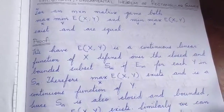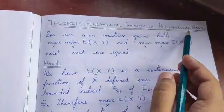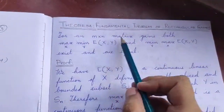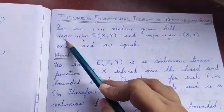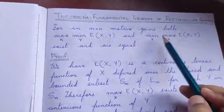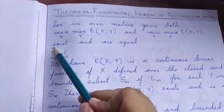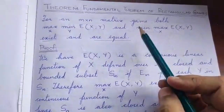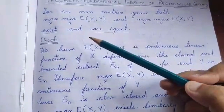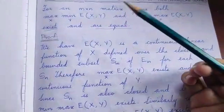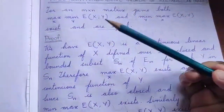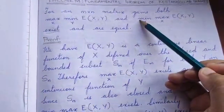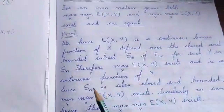Now we will look at the proof of the fundamental theorem of rectangular games. The statement of the theorem is: we have to prove that for an m by n matrix game, both maximum over x minimum over y E of xy, and minimum over y maximum over x E of xy exist and are equal. Here we are proving that in the case of the expectation function or payoff function, these two quantities always exist and they are equal.